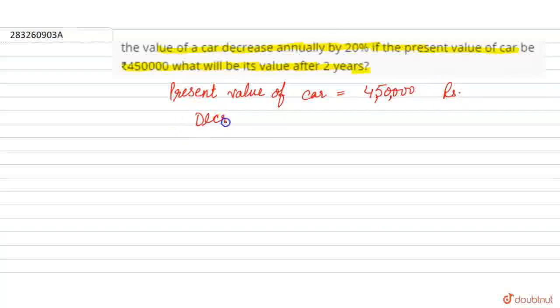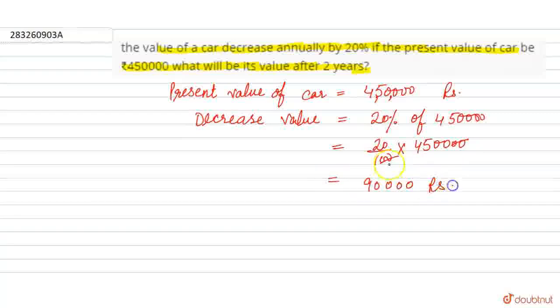The decrease value is 20% of 450,000. So what do we do? 20%, that's 20 by 100, multiply by 450,000. Two zeros cancel, then 45 becomes 90, add 3 zeros, so we get 90,000.